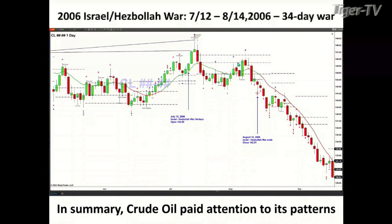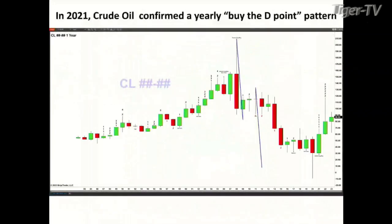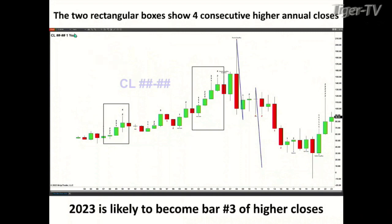This is going to help us navigate what's going to happen going forward. Looking at 2021 — this was a wild market, especially after 2020 when crude futures went below zero — crude oil confirmed a yearly buy D-point pattern. I show the A-to-B and C-to-D legs. Confirmation of a buy D-point pattern, or Gartley buy pattern, comes with a bullish reversal candle — in this case a bullish engulfing candle.